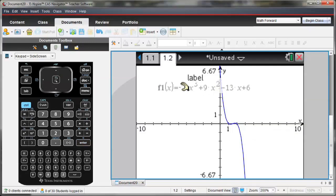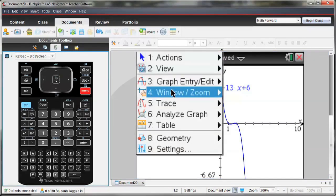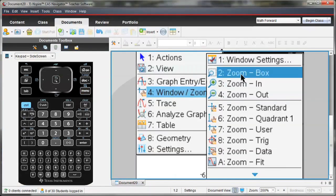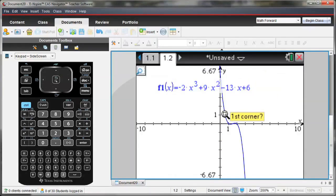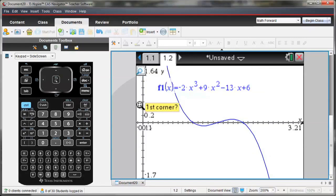Looking at my graph, I notice I'm not using the entire window. There are a couple of ways to change the window. The quickest one would be to go to window options, Zoom Box, because I want to specifically look in here to find my minimum and maximum values. With Zoom Box, I can just look at a certain region of the graph.